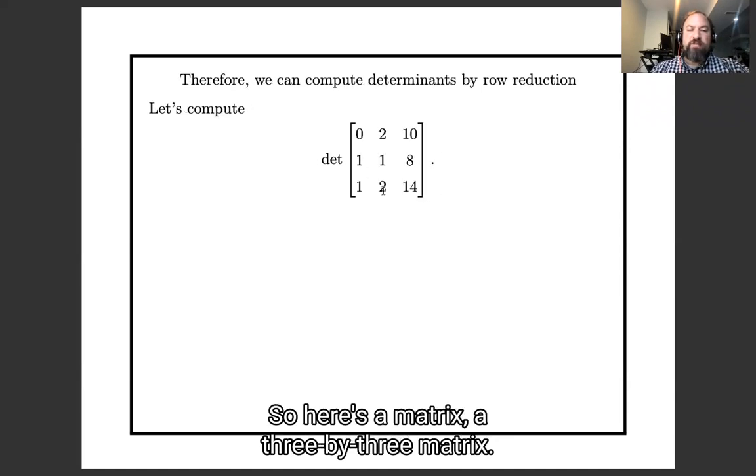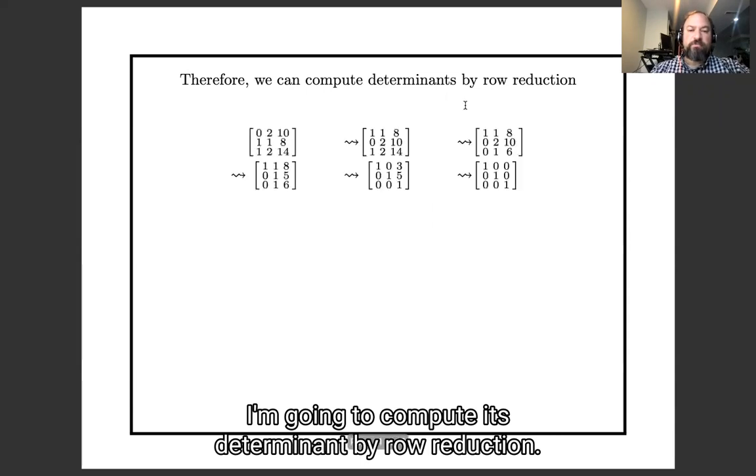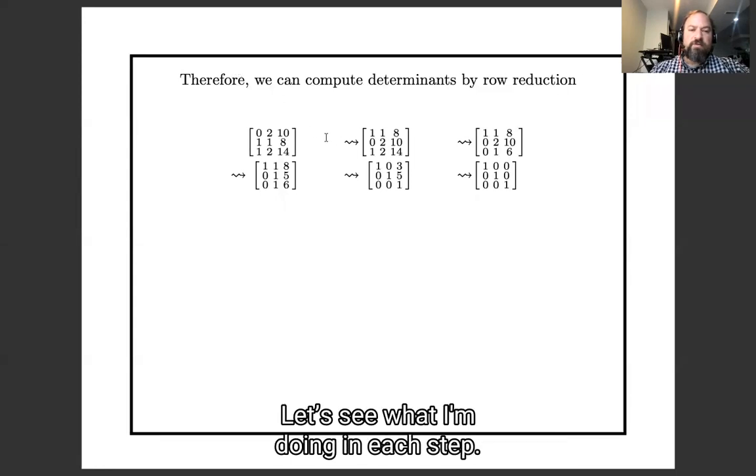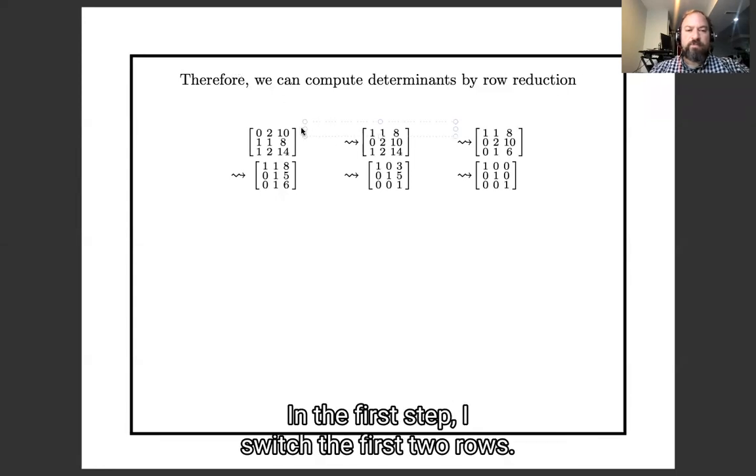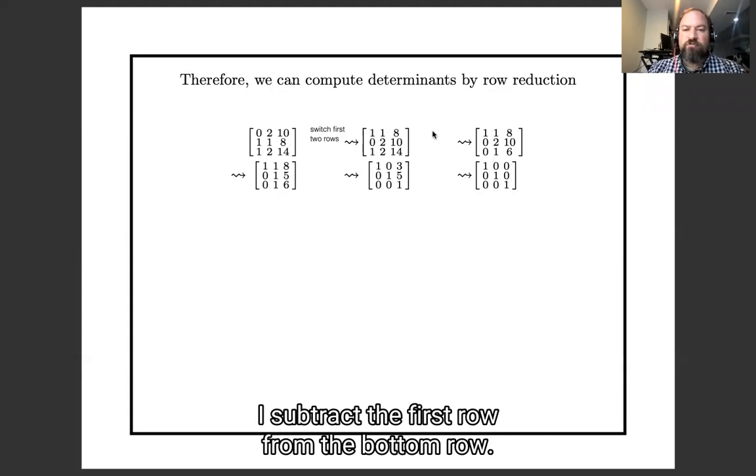So here's a matrix, a 3x3 matrix, I'm going to compute its determinant by row reduction. Here's the row reduction algorithm. Let's see what I'm doing at each step. In the first step, I switch the first two rows. See? This 0, 2, 10 moved down here, this 1, 1, 8 moved up here. In the next step, I subtract the first row from the bottom row.